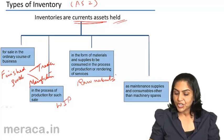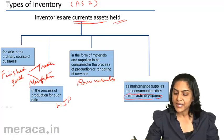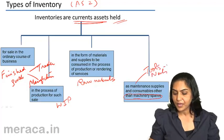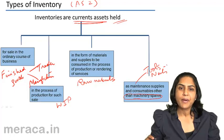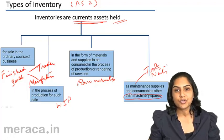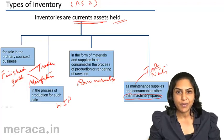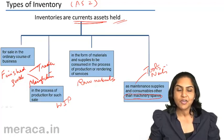In addition, we have maintenance supplies and consumables other than machinery spares. Maintenance supplies would refer to maybe some tools, nuts, bolts, etc. However, there may be certain spares which can be used only by a specific machine — they cannot be used on other machines, nor are they expected to be used at regular intervals. Such specific machinery spares are not considered a part of inventory; they are considered a part of the machinery itself and therefore they are a non-current asset or a fixed asset.